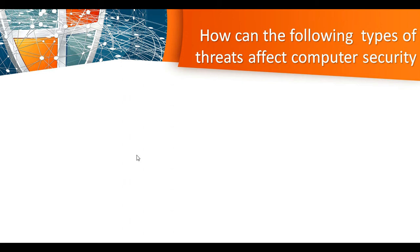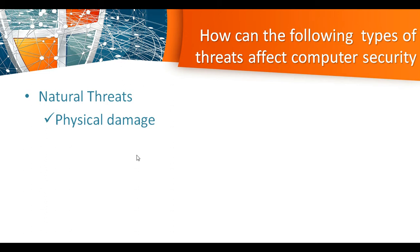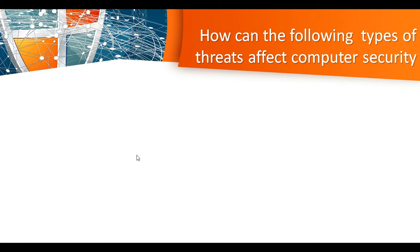Question number 2: How can the following types of threats affect computer security? First, natural threats — natural threats such as floods can damage our computer physically and can cause compromises of functions. It might lead to malfunctions where the computer can no longer provide service because it's already damaged. The risk is you might not be able to retrieve the information from that computer caused by natural threats.